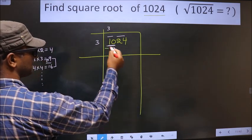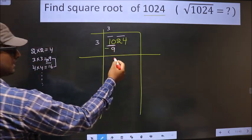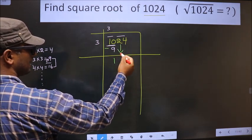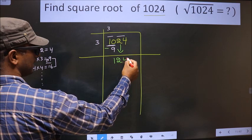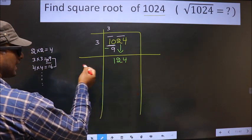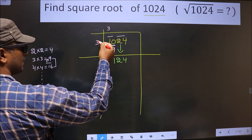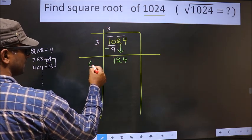Now we should subtract. 10 minus 9 is 1. This pair as it is you take down, making it 124. And here you should add these two numbers. That is 3 plus 3, 6.